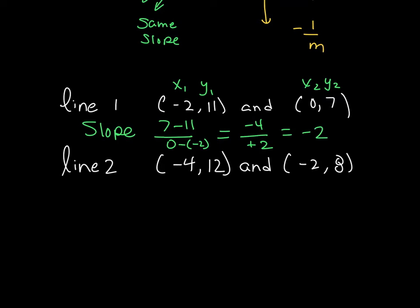So let's do the slope for the second line. I'm going to label them x1 and y1, x2, and y2. So my slope of this line is y2, which is 8, minus y1, which is 12, divided by x2, negative 2, minus negative 4. And that negative and negative turns that into a positive. And that is going to leave me with negative 4 over 2, which is still negative 2.